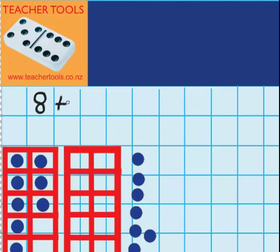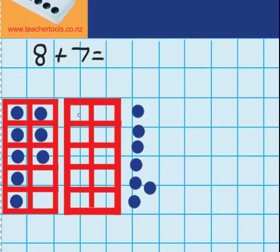8 counters plus 7 counters equals something. You can see down here I've got 2 tens frames again, just like the last lesson. This one's already got 8 counters in it, and I've got 7 more counters over here. I'm going to use our tens frame to help me answer this question.